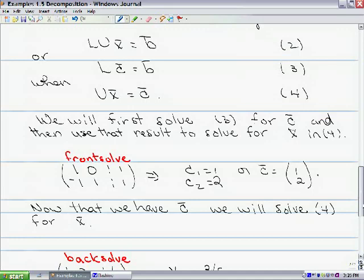The front solve process here will give me that C1 is equal to 1, and then solving the second equation, we get that C2 is equal to 2. So we have here that our vector C, solving equation 3, is 1, 2.